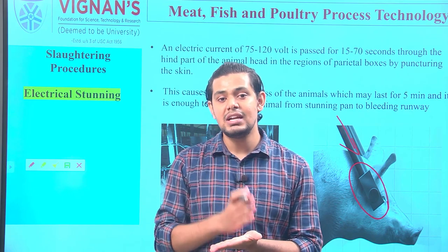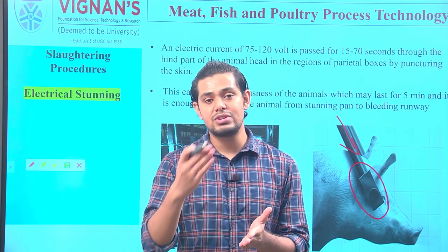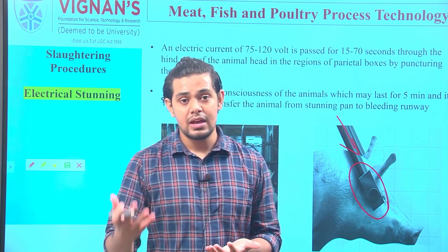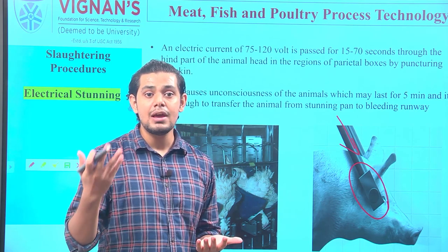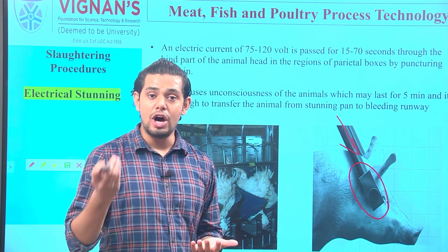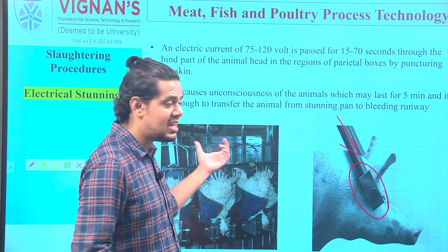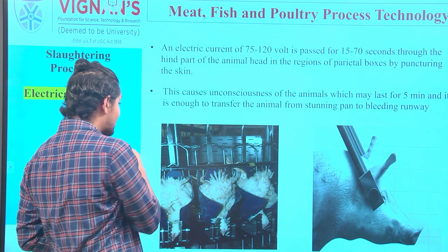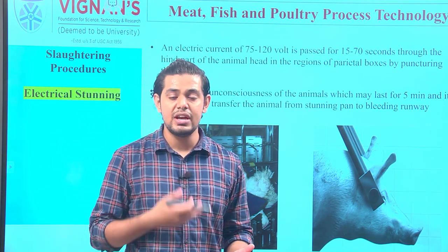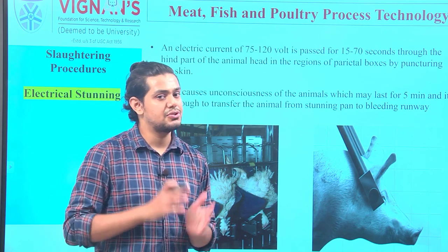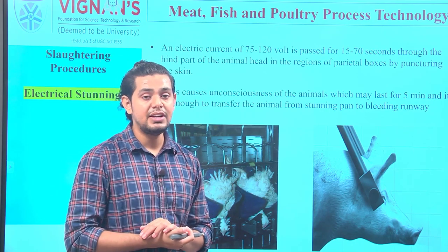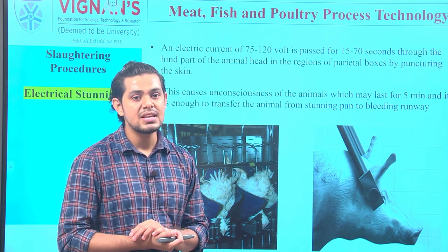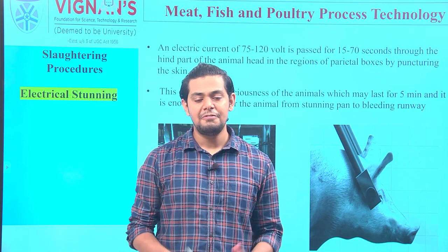To give an overview of what we have studied so far: stunning is a process employed to render an animal to unconsciousness, which in turn ensures the animal does not experience any kind of pain, discomfort, or stress. The three important methods of stunning include mechanical stunning, chemical stunning (also called anesthetization), and the electrical method of stunning.